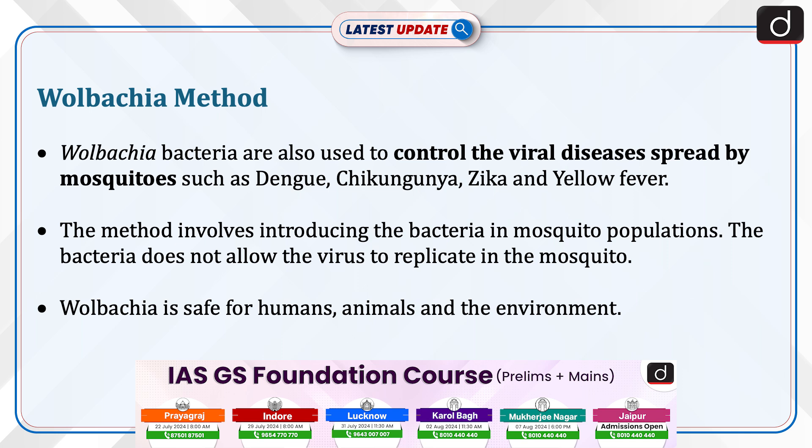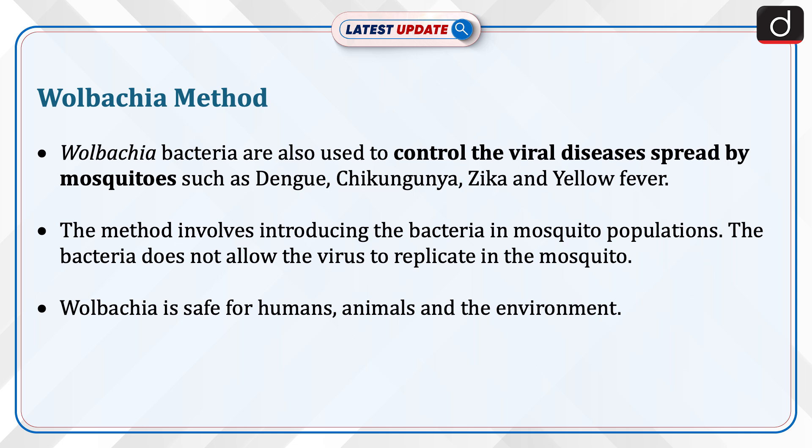Wolbachia bacteria are also used to control the viral diseases spread by mosquitoes, such as dengue, chikungunya, zika, and yellow fever. The method involves introducing the bacteria into mosquito populations. The bacteria does not allow the virus to replicate in the mosquito. Wolbachia is safe for humans, animals, and the environment.